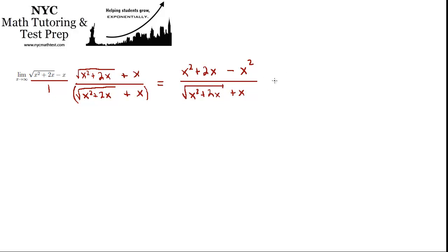Okay, and then we're able to make a simplification in the numerator because we have x squared minus x squared. So we now have 2x over that same denominator, no change, x squared plus 2x plus x, where this part's under root.